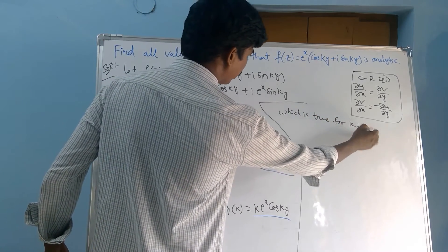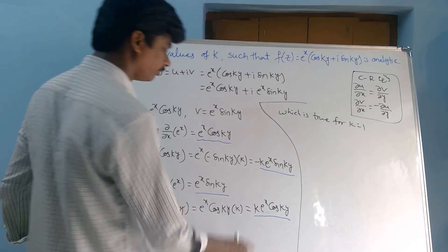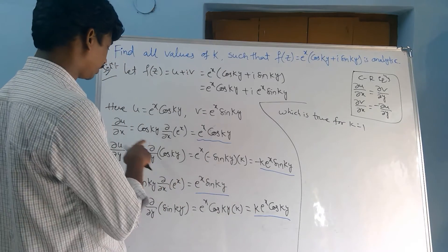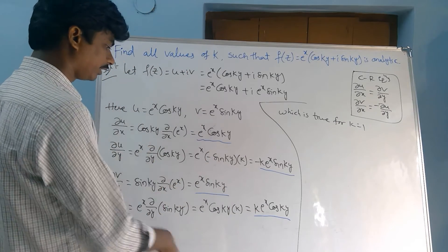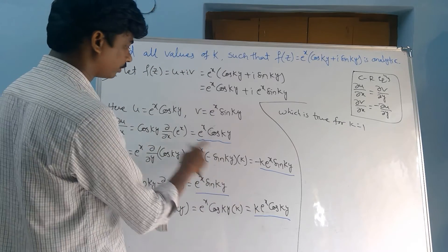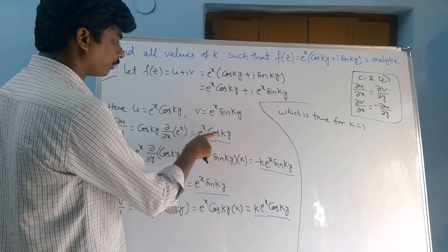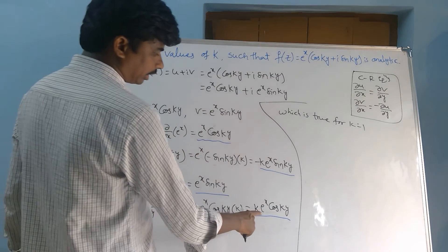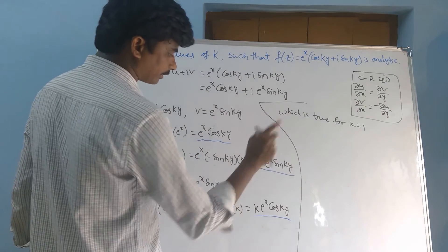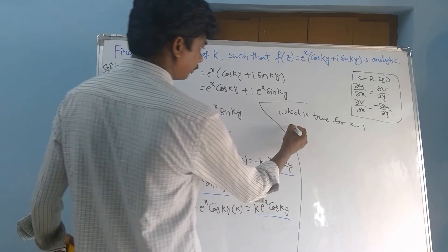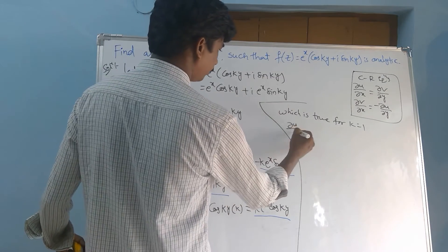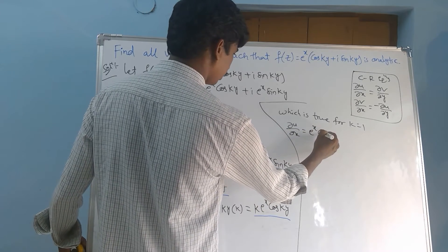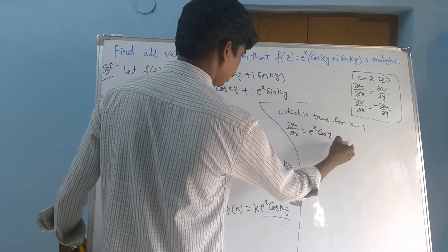This is true when k = 1. Substituting k = 1: ∂u/∂x becomes e^x · cos(y), and ∂v/∂y also equals e^x · cos(y).